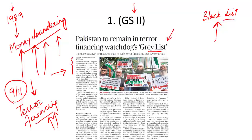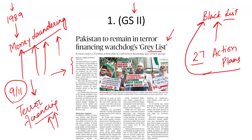Pakistan has been placed on the grey list twice. The last time Pakistan was put on the grey list, it was given 27 action plans to comply with, failing which it would be placed on the more stringent black list. At a review meeting in November, it was found that Pakistan had complied with only 5 of these 27 action plans, and Pakistan was warned that at the February 2020 review, it risked being blacklisted.